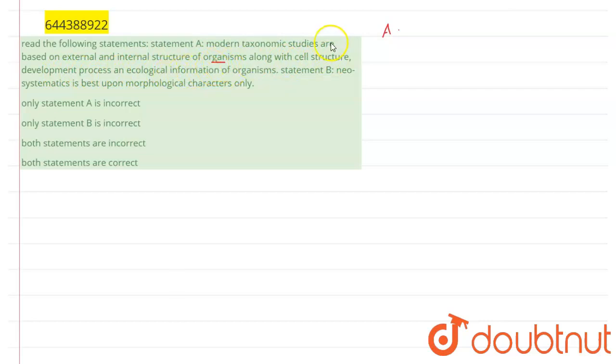Modern taxonomic studies are also called neosystematics or biosystematics. These neosystematic studies are also known as modern taxonomic studies because here all aspects of an organism are considered.